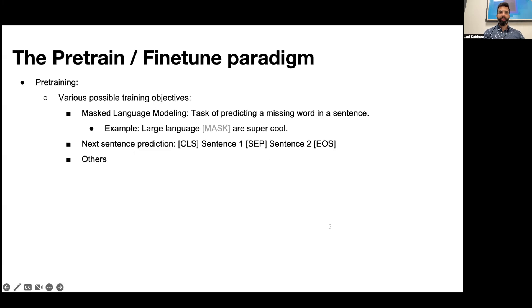Now under pre-training, there are many possible training objectives that have been explored in the literature. Some of the popular ones include masked language modeling which leads to the task of predicting a missing word from a sentence. For example, large language and then a masked word are super cool.